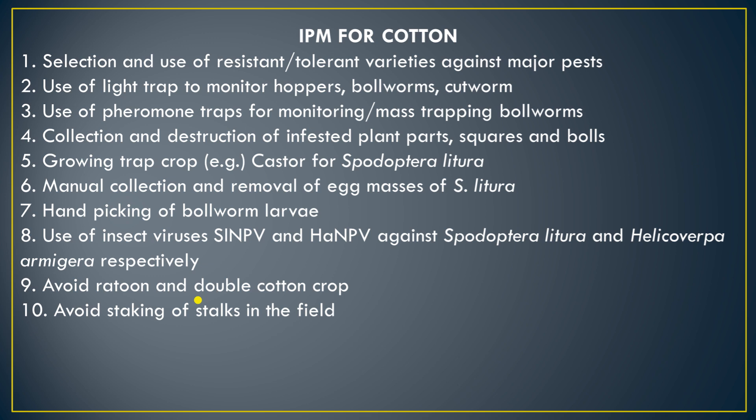Next is collection and destruction of infested plant parts. Next is growing trap crops, like castor and okra. Next is manual collection and removal of egg masses of Spodoptera litura (tobacco caterpillar) — we can manually collect and destroy their egg masses. Next is hand picking of bollworm larvae. Bollworm is a very major pest of cotton, and we can hand-pick and destroy them.